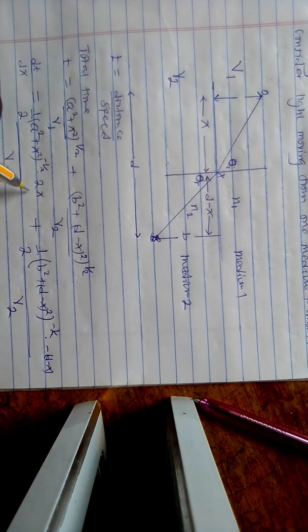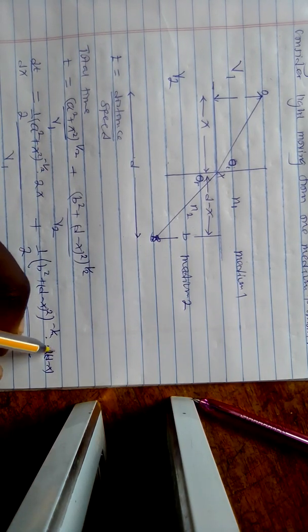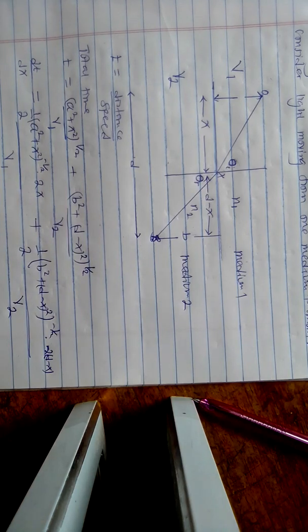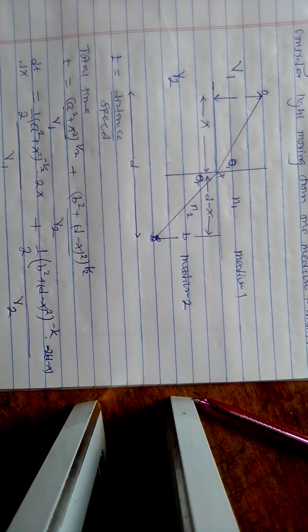So the 2's will cancel. Now from Fermat's principle, dT/dx is equal to zero for minimum time.